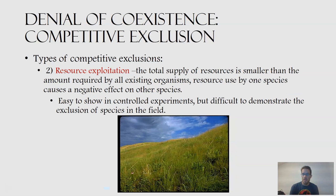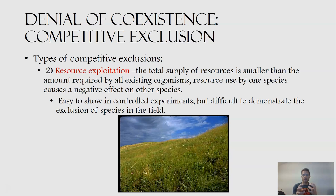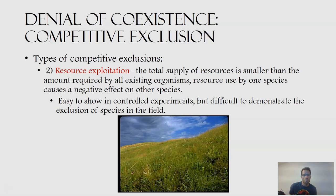The second type of competitive exclusion is resource exploitation. The total supply of resources is smaller than the amount required by all existing organisms, so resource use by one species causes a negative effect on another. This is essentially the definition of competition — species compete for a shared, limiting resource that gets used up. Resource exploitation is easy to show in controlled experiments, but actually pretty difficult to demonstrate in the field. Looking at an image of a prairie with loads of species, it's really difficult quantitatively to demonstrate resource exploitation in nature, though intuitively and experimentally we know it's true.